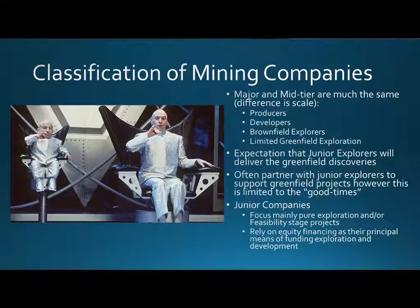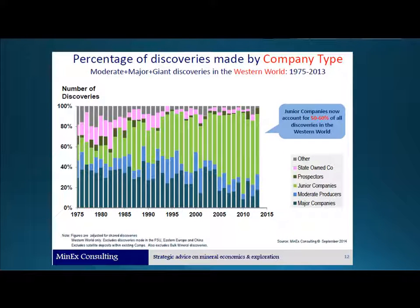Junior companies focus mainly on pure exploration or feasibility stage projects. We rely on equity financing — we have no other income unless fortunate enough to have an R&D tax concession or something like that. Generally, you rely on healthy equity markets to finance your projects. Another slide from Richard Chaudi just shows that we do make a large percentage of the discoveries worldwide — they do come out of junior explorers exploring in greenfield terrains.